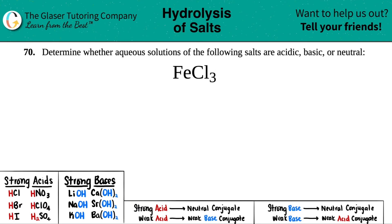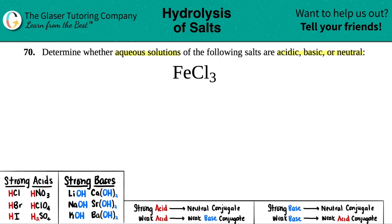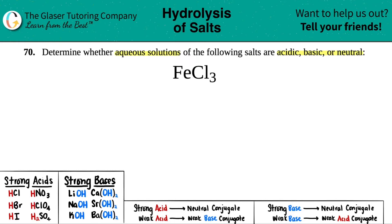Problem number 70: determine whether aqueous solutions of the following salts are acidic, basic, or neutral. We have iron 3 chloride, FeCl₃. Is this salt acidic, basic, or neutral? Just know that another word for salt is ionic compound — the ionic compounds we've known throughout this whole chemistry adventure.